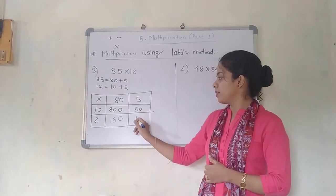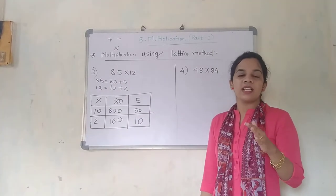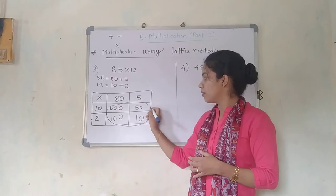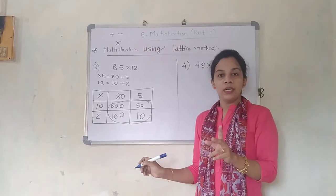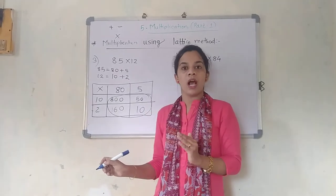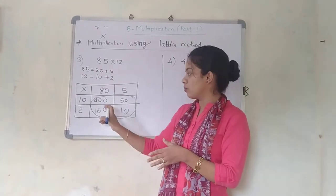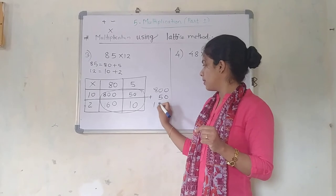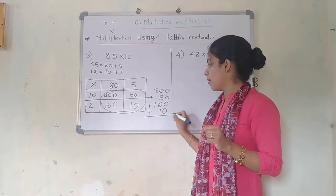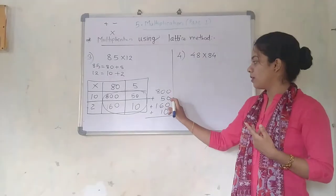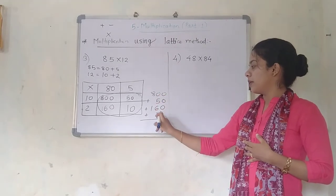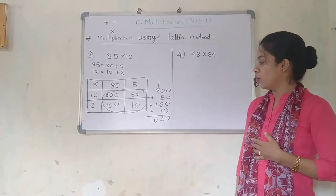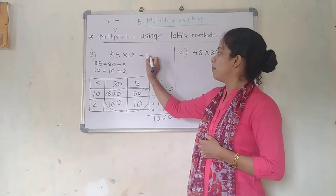Now, 2 multiplied by 5 — what is the answer? Yes, it is 10. So now what is my work? I am supposed to add the numbers from the calculation I formed. Earlier it was 2-digit into 1-digit multiplication; now it is 2-digit into 2-digit, so there will be 4 calculations. 800, 50, 160, and 10. Adding: 0+0+0+0 = 0; 5+6+1 = 12; 1+8 = 9; 9+1 = 10. My total answer is 1020.